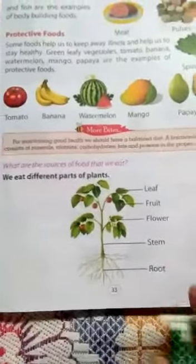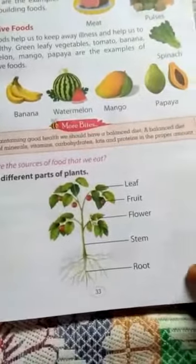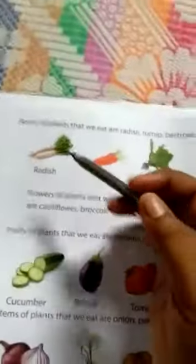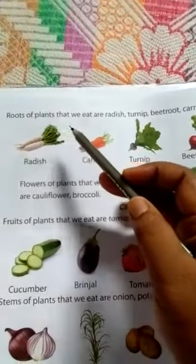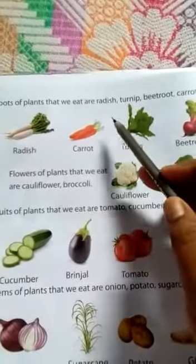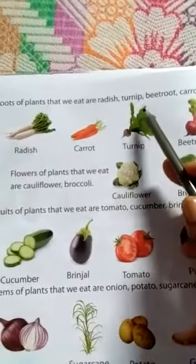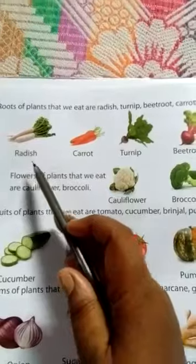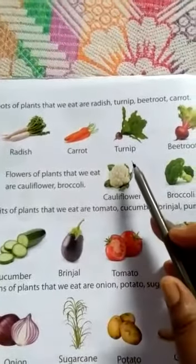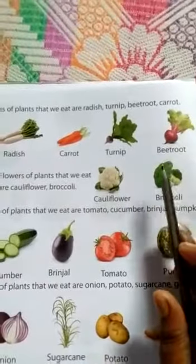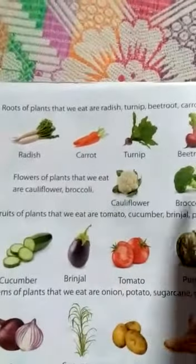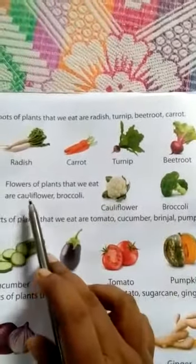On page number 34, we learn about parts of plants that we can eat. First are roots. The roots of plants that we eat are radish, turnip, beetroot, and carrot. Pictures are also given there — radish, carrot, turnip, and beetroot. These are the roots of plants that we can eat.